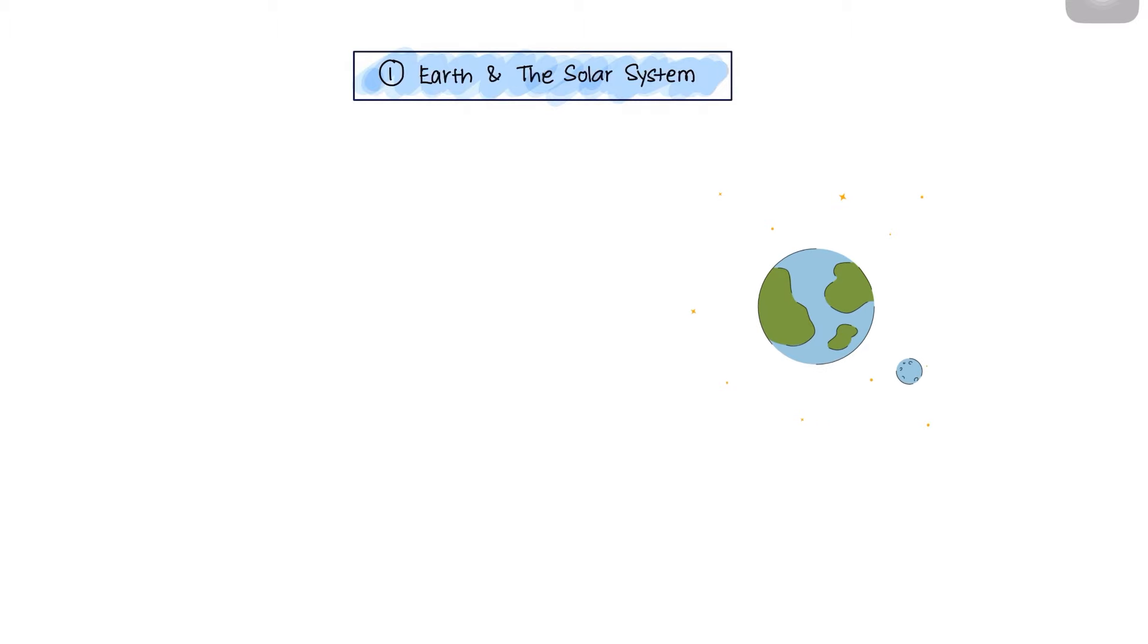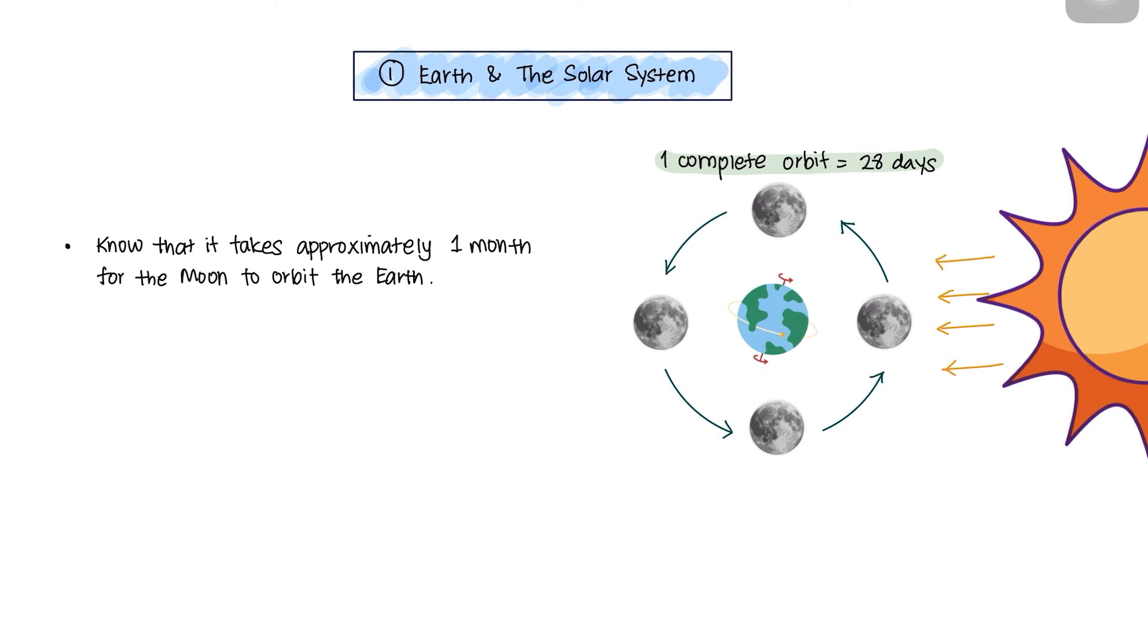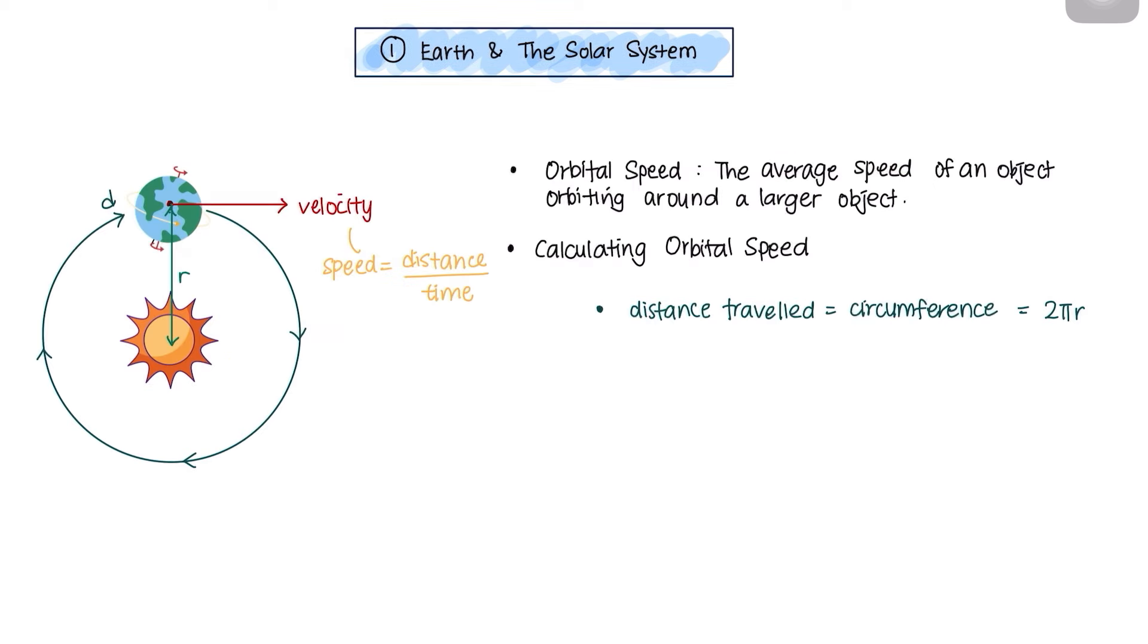Now let's look at the Moon. The Moon is a satellite around the Earth. Know that it takes approximately one month for the Moon to orbit around the Earth. The Moon shines with reflected light from the Sun. It does not produce its own light. Therefore, because of this, we experience the periodic nature of the Moon's cycle of phases.